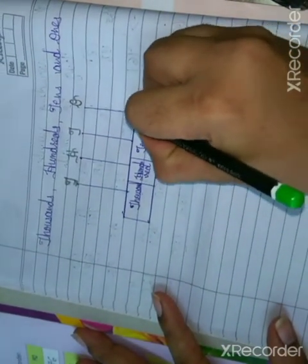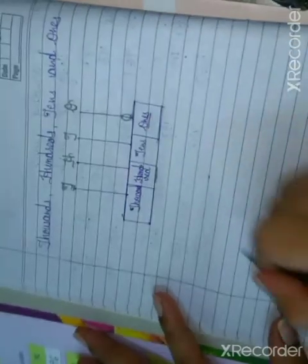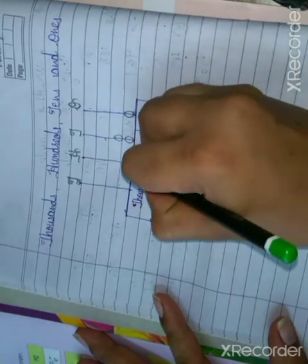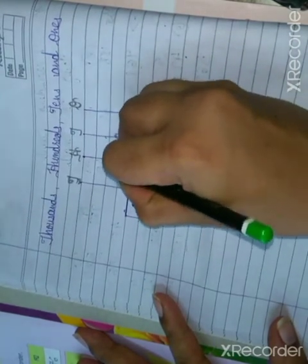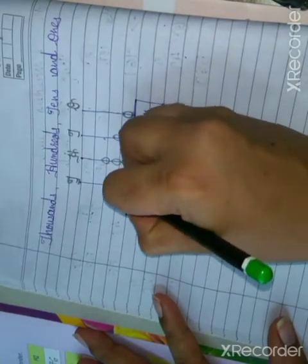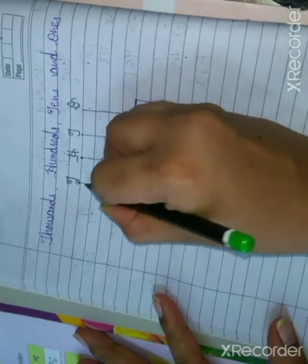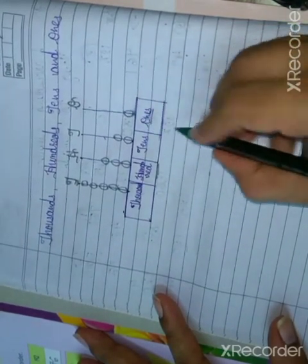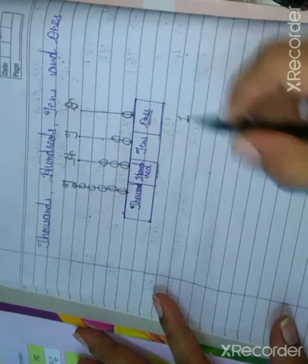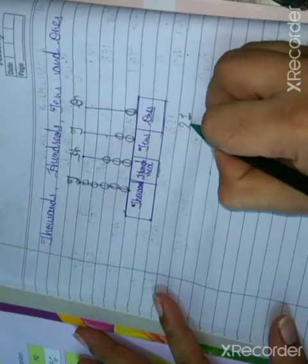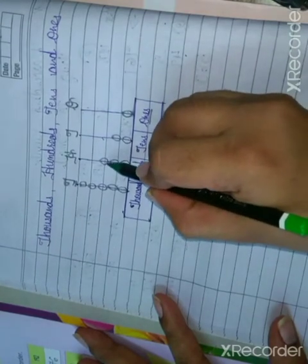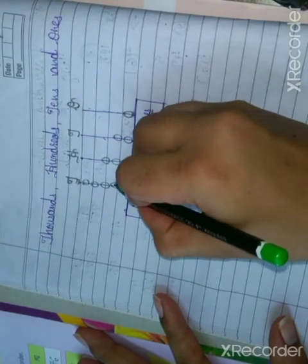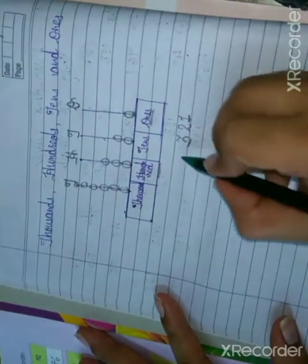In the ones place, one bead is there. In the tens place, two beads are there. In the hundreds place, three beads are there. And in the thousands place, five beads are there. Then you can draw the beads as per number. Let's recount: ones place one bead, tens place two beads, hundreds place one, two, three beads, and thousands place one, two, three, four, five beads.